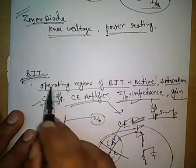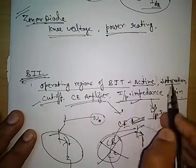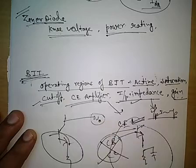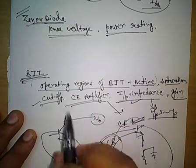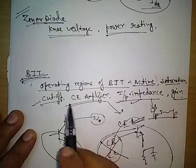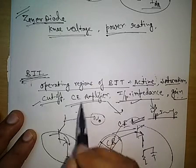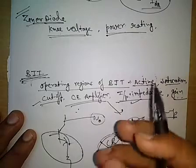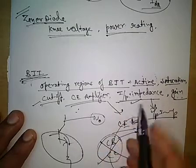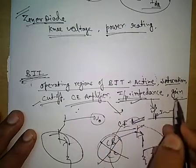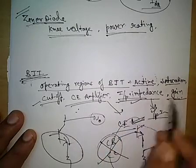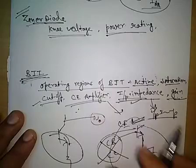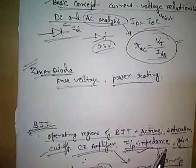So for BJT, we must study the operating regions and the common emitter amplifier, since most questions come from this topic. We also need to be able to derive the input impedance and gain so that we can solve the related problems.